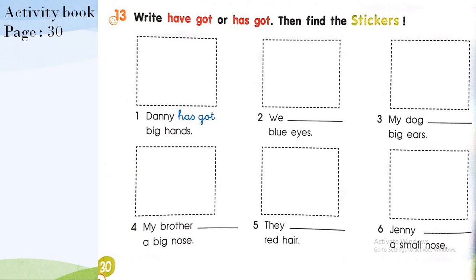When you see a singular noun you write 'has got', and when you have a plural noun you write 'have got'. Number one: Danny has got big hands. Number two: We have got blue eyes. Number three: My dog has got big ears.